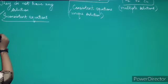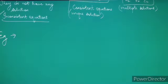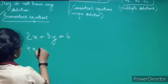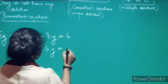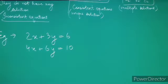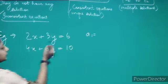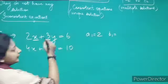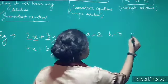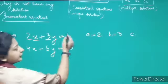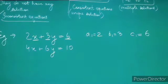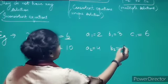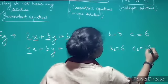The system of equations given to us is: 2x + 3y = 6 and 4x + 6y = 10. The value of a1, the coefficient of x, is 2. The value of b1, the coefficient of y, is 3. And c1, the constant, is 6. The value of a2 is 4, the value of b2 is 6, and the value of c2 is 10.